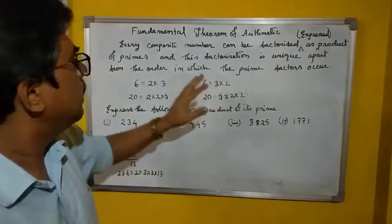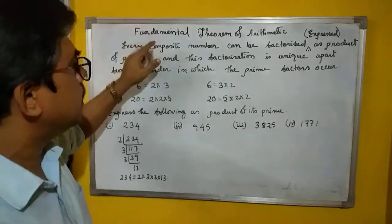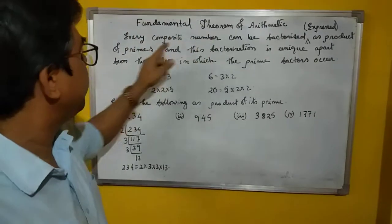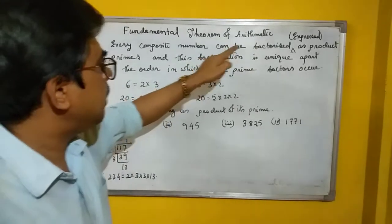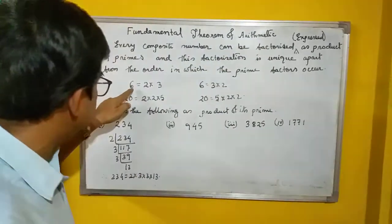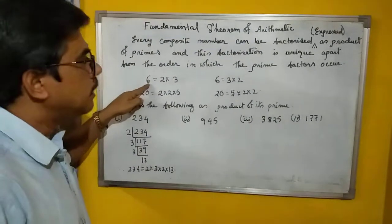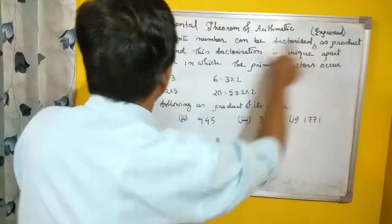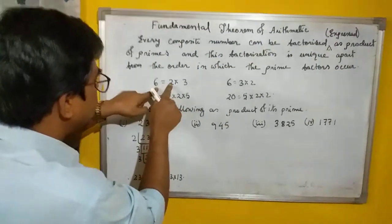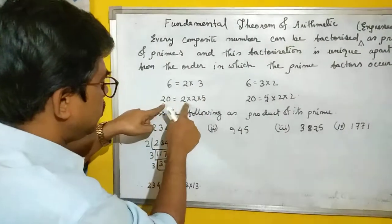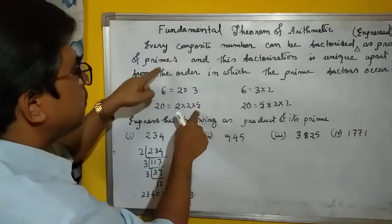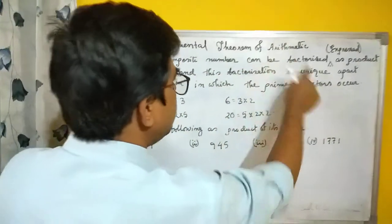Let me explain. Every composite number can be factorized as a product of primes. For example, suppose 6 is a composite number - it can be expressed as 2×3, a product of primes. Or 20, which is 2×2×5, product of primes. The factorization is unique.